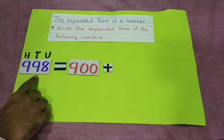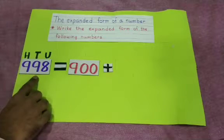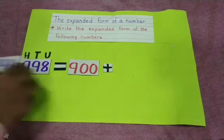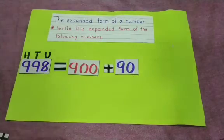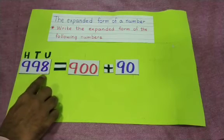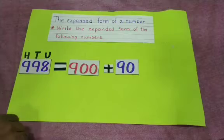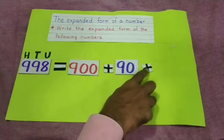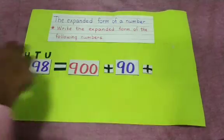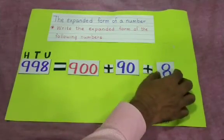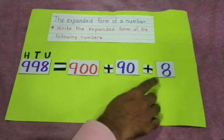How many tens are there? 9 tens are there. 9 tens means 90, so you have to write 90. How many units are there? 8. So before writing 8, you have to put the plus sign and then write 8. So 998 = 900 + 90 + 8.